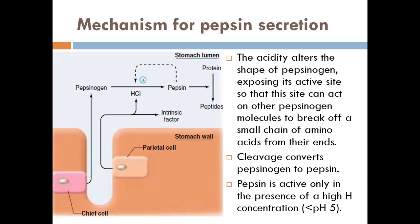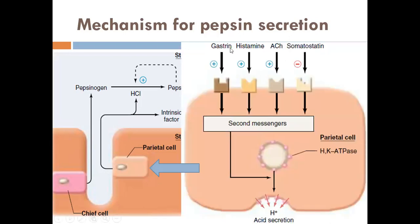To activate pepsin, you need factors that stimulate production of hydrochloric acid. The parietal cell is stimulated by gastrin, histamine, and acetylcholine; somatostatin is inhibitory. When these bind to receptors, they activate G-protein-coupled receptors and generate second messengers involved in translocation of pumps. A vesicle containing the hydrogen-potassium ATPase pump is translocated and embedded within the apical side of the parietal cells, where it pumps — exchanging potassium for hydrogen ions. The hydrogen ions combine with chloride for production of hydrochloric acid.